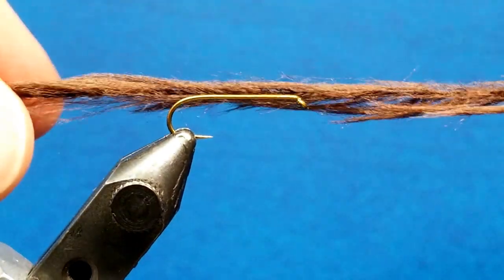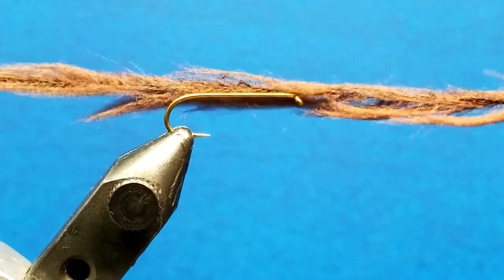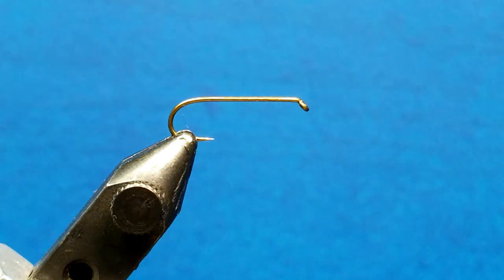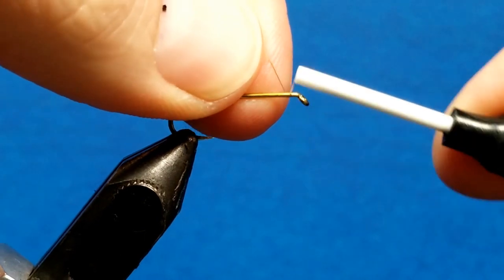Ultimately you want to get it to a point where it has this nice kind of puffy frayed appearance to it. So we'll come in very simply and attach the thread just right behind the eye of the hook here.